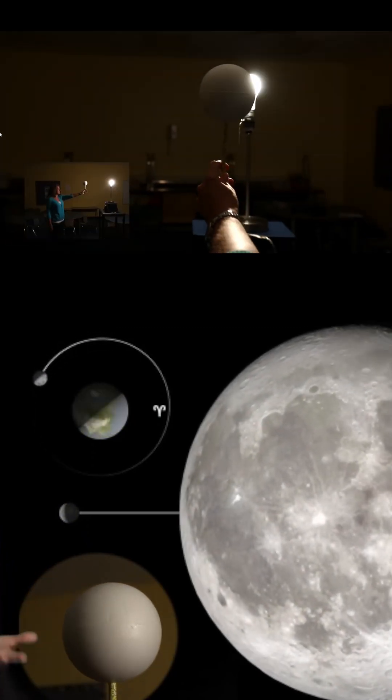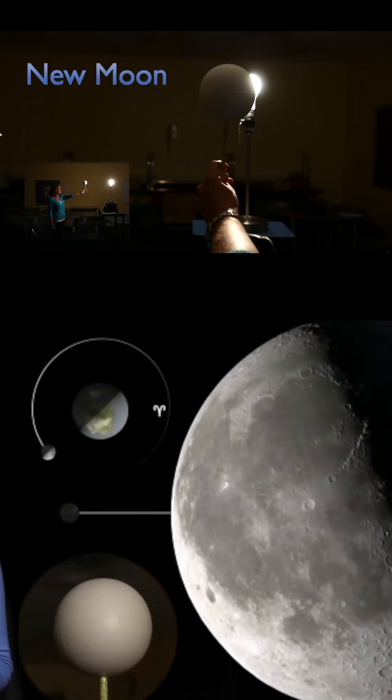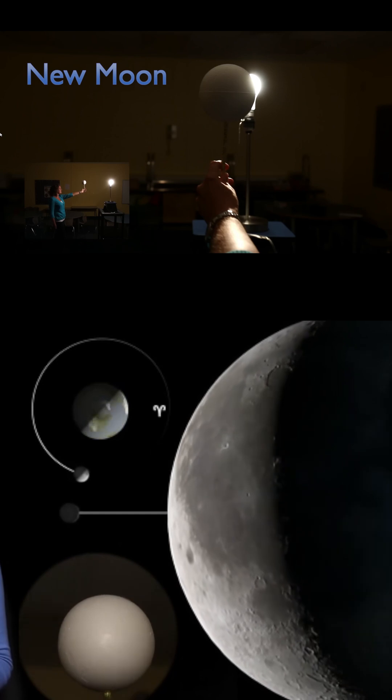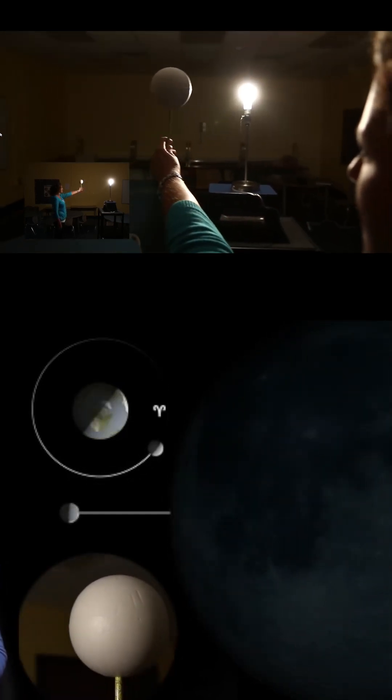From this angle, you can see what I am seeing from Earth. We call this new moon. When it's new moon, we look up at the sky, and we can't see the moon. It's there, but the side that's reflecting sunlight is away from us.